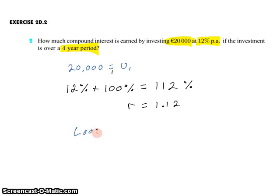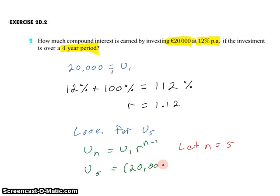So we're going to look for the fifth term, U5, in this sequence. In general, a geometric sequence follows the pattern Un equals U1 r to the power of n minus 1. Now, we're looking for U5, so we're going to let n be equal to 5. The initial term is 20,000. The common ratio is 1.12, and n is 5. So 5 minus 1. We'll raise 1.12 to the power of 4 and multiply by 20,000.